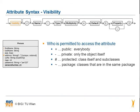The first aspect is visibility. As you can see in the building plan, you can also skip it if it's not needed. There are four possibilities to show the visibility of an attribute.